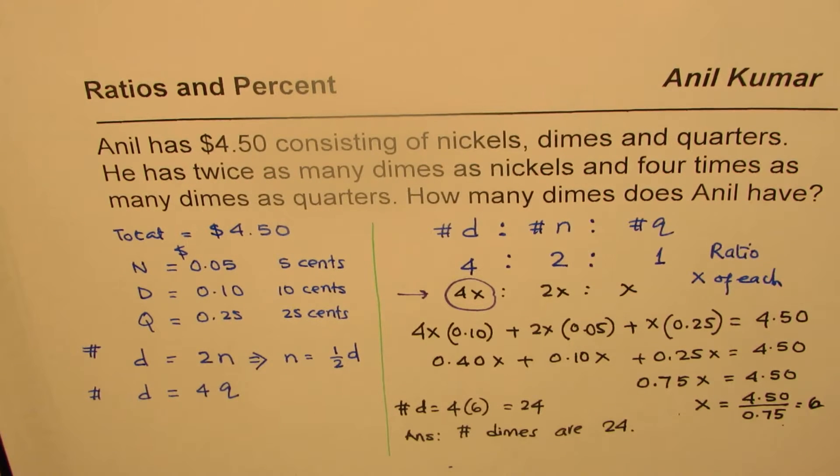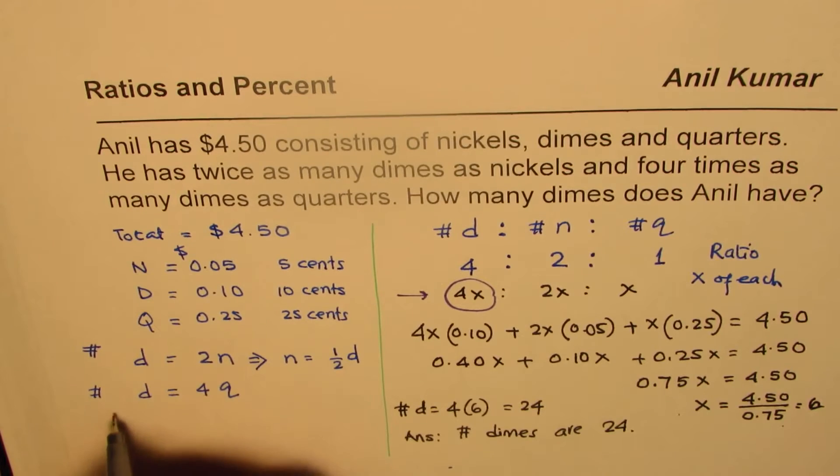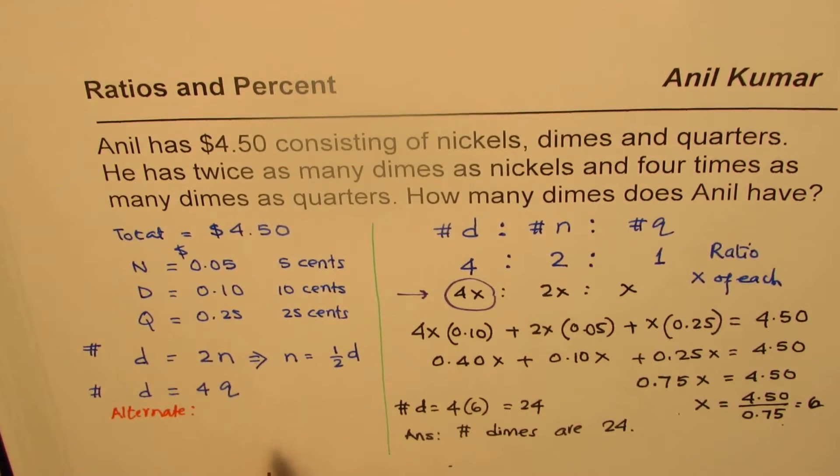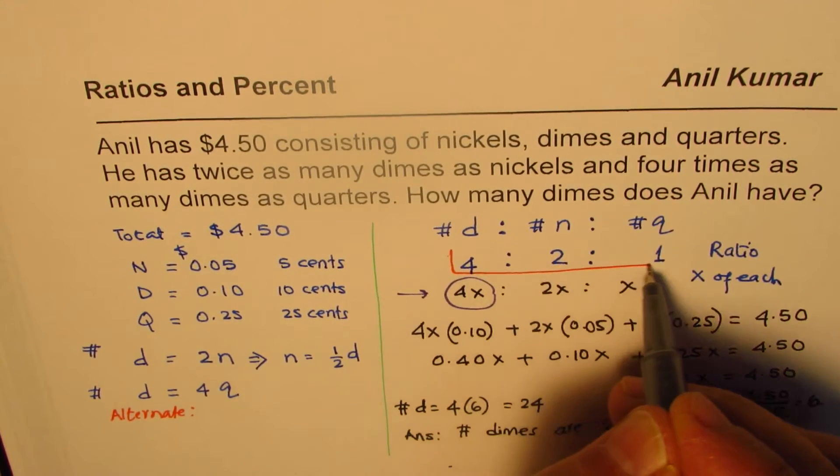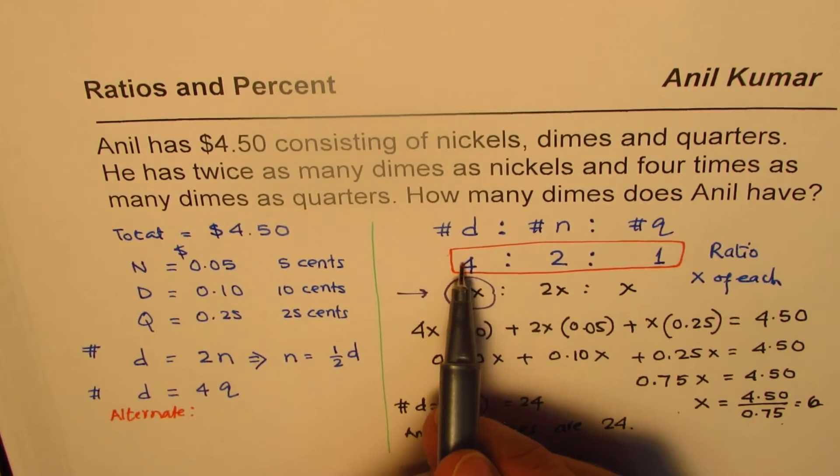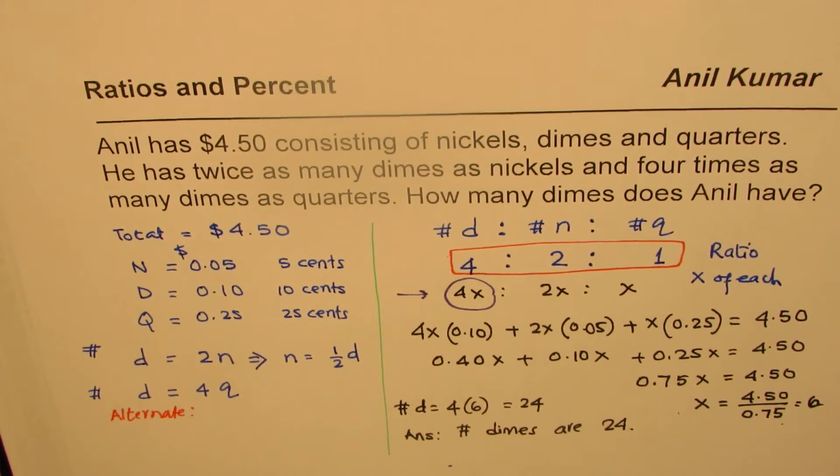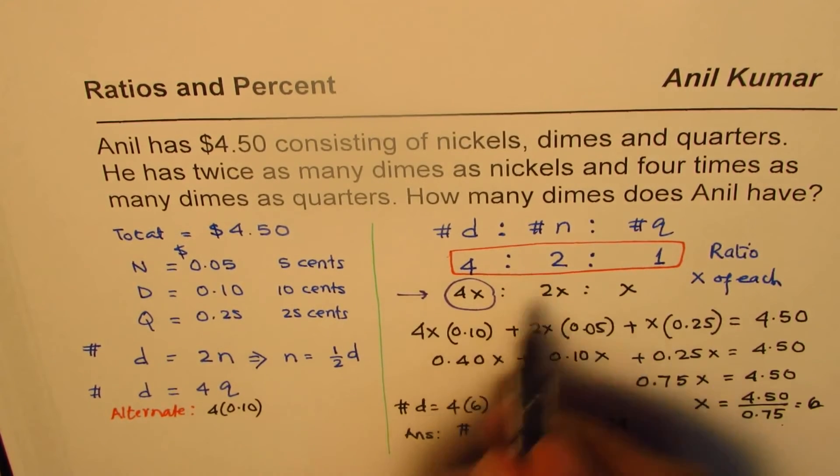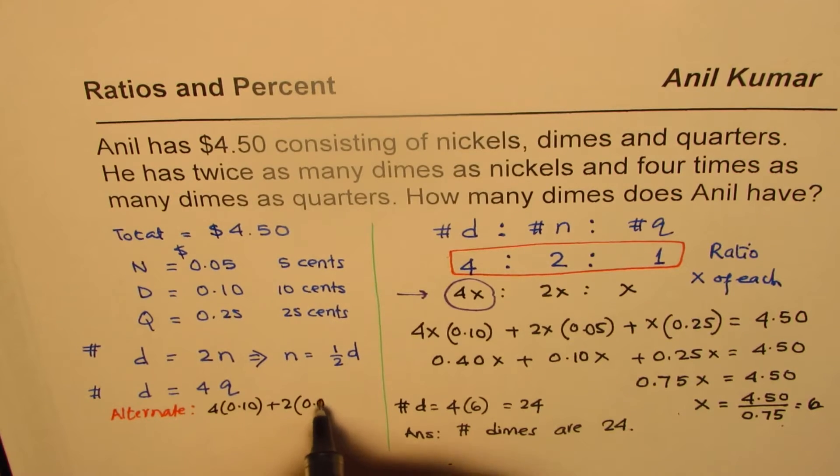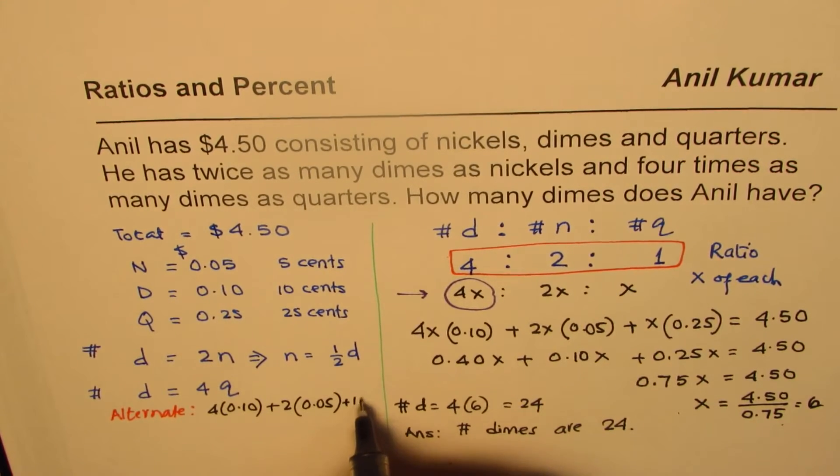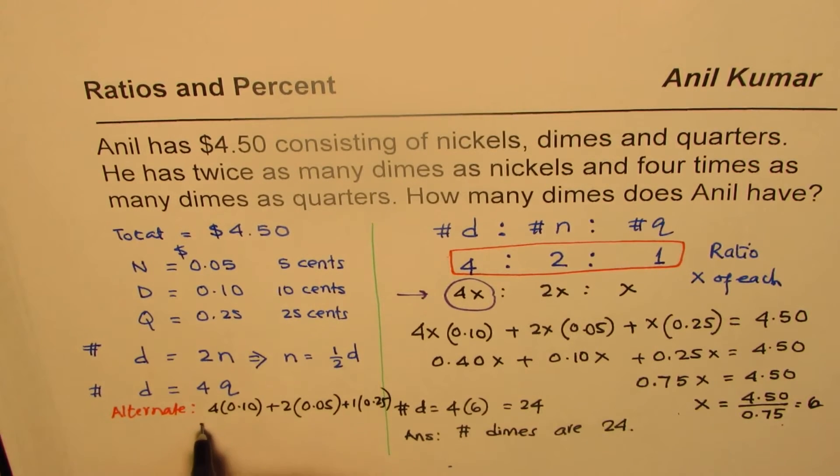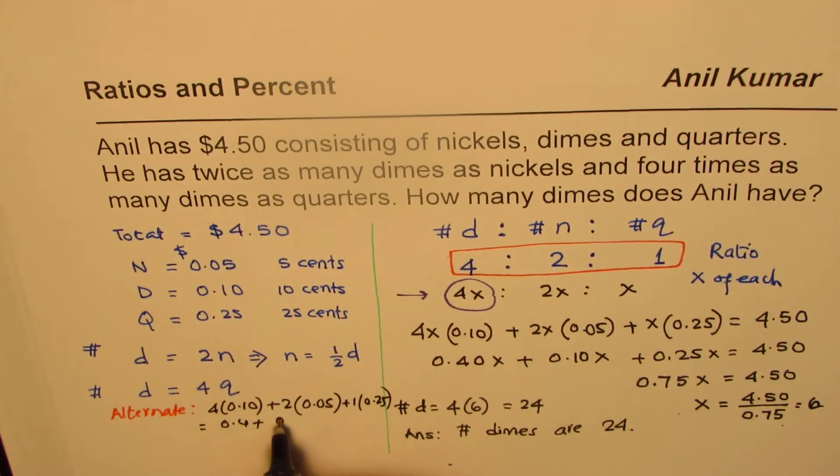Now here is an alternate method also. Let me write down alternate method, which you could always apply in such questions. And that is to say, what is the value of this set? That is 4 dimes, 2 nickels and 1 quarter. Now 4 dimes is 4 times 0.10, 2 nickels is 2 times 0.05 and 1 quarter is 1 times 0.25. So you can find what this value is.